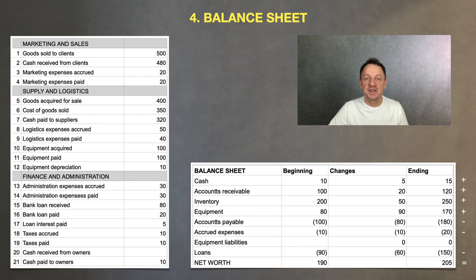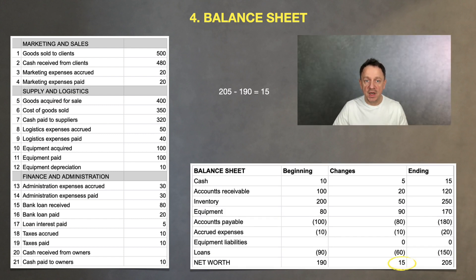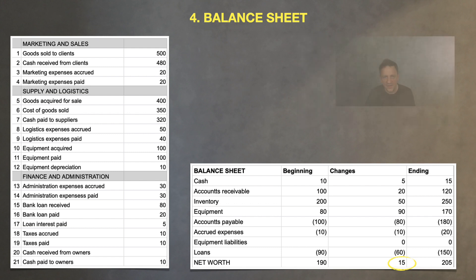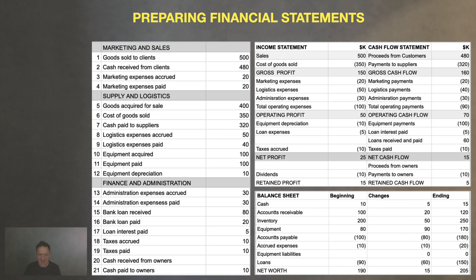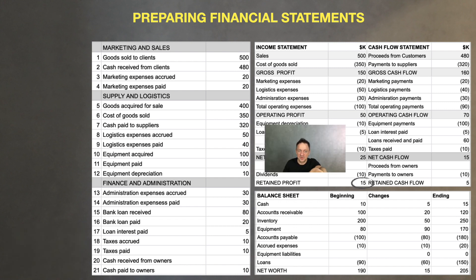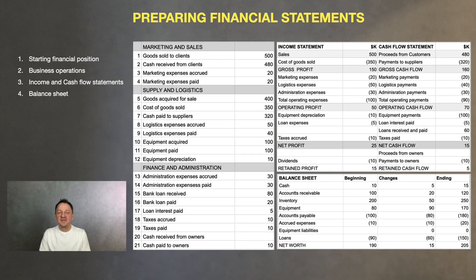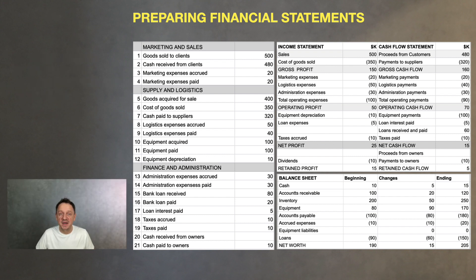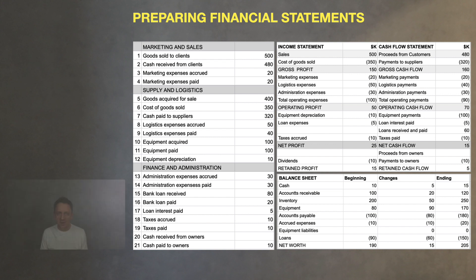Now let's see the net worth increase the company gained over these six months. We had $190K but now $205K, so the company gained equity value by $15K. This $15K feels familiar — that's exactly our income statement retained profit. What a coincidence! Now guys, we've completed the whole process of preparing the financial statements for management from the starting point to the ending management balance sheet. But the main question is not how to prepare, but how to plan and manage the financial result. So guys, we have something important to do in our next coming modules.